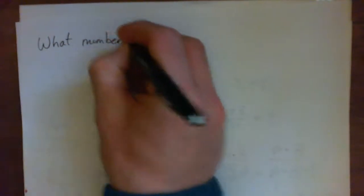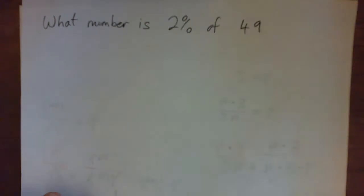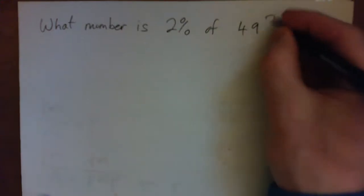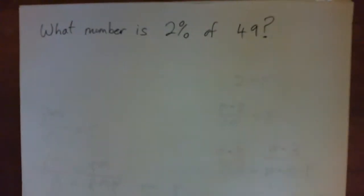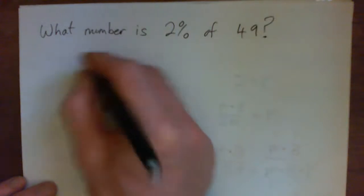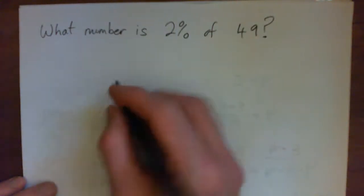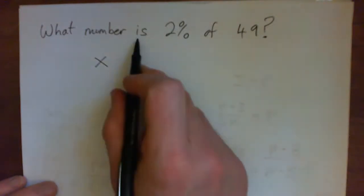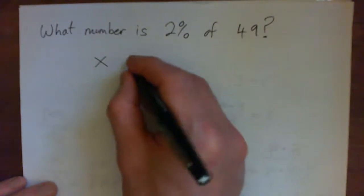So this one we're going to do what number is 2% of 49? Let's turn the sentence into an equation just for fun. I mean we can see that to get the answer we just need to get 2% of 49, but I'm going to turn this sentence into an equation just for practice. What number, give it some letter like X, is in math can be replaced with an equal sign.